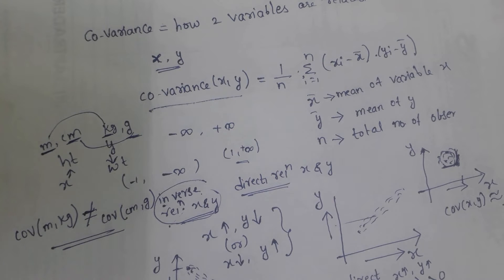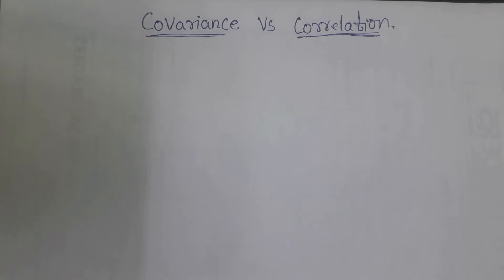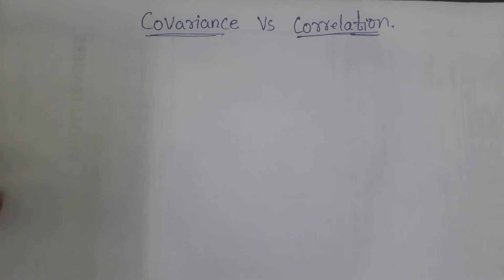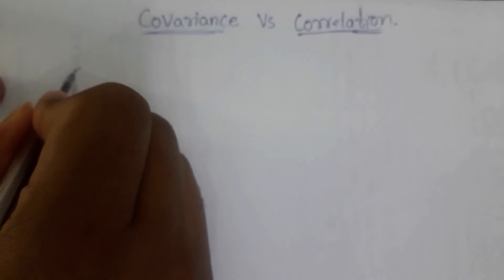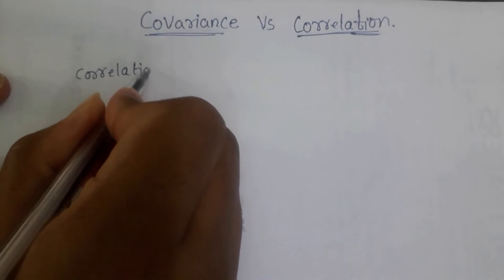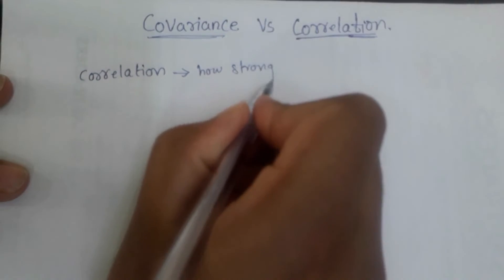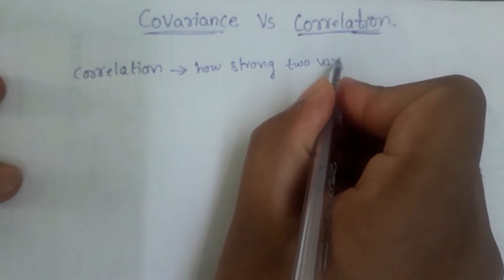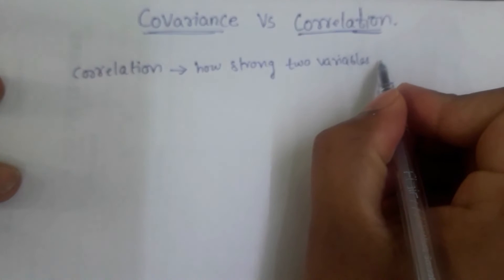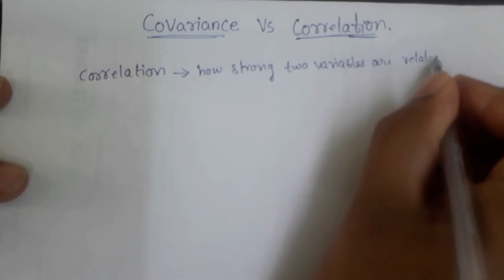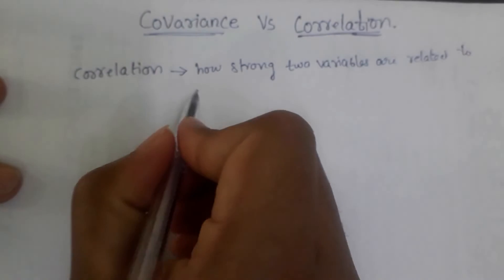Now let's talk about correlation. The drawback of covariance is that it only tells us whether there is a direct or inverse relationship, but not how strong that relationship is — like 90% similar or 70% similar. Correlation is defined as how strongly two variables are related to each other.